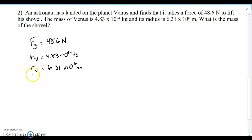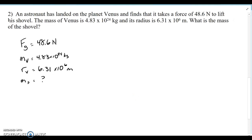We're looking to find the mass of the shovel. That's what we want to find. We can use Newton's universal law of gravitation: Fg equals big G, the mass of the first object, mass of the second object, over the distance between them squared.